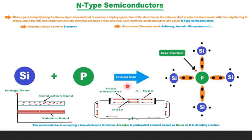When a potential difference is applied across N-type semiconductor, the free electrons move towards the positive terminal, carrying an electric current. As the flow of current is by free electrons, which carry negative charge, this type of conductivity is called negative or N-type conductivity. Electron-hole pairs are formed at room temperature; the holes available in small quantity in the valence band also constitute a small amount of current, but for practical purposes, this current is negligible.